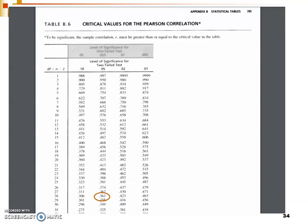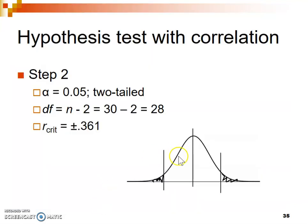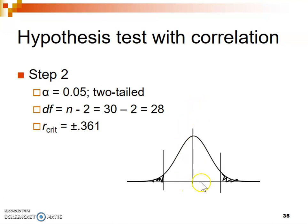Let's talk about what our distribution looks like. This is the distribution for all of the possible values we could get for our correlation — all of the possible R values when measuring a correlation. We're always testing our hypothesis against the null hypothesis, and the null hypothesis is at the center of our distribution. According to the null hypothesis, there should be no correlation.